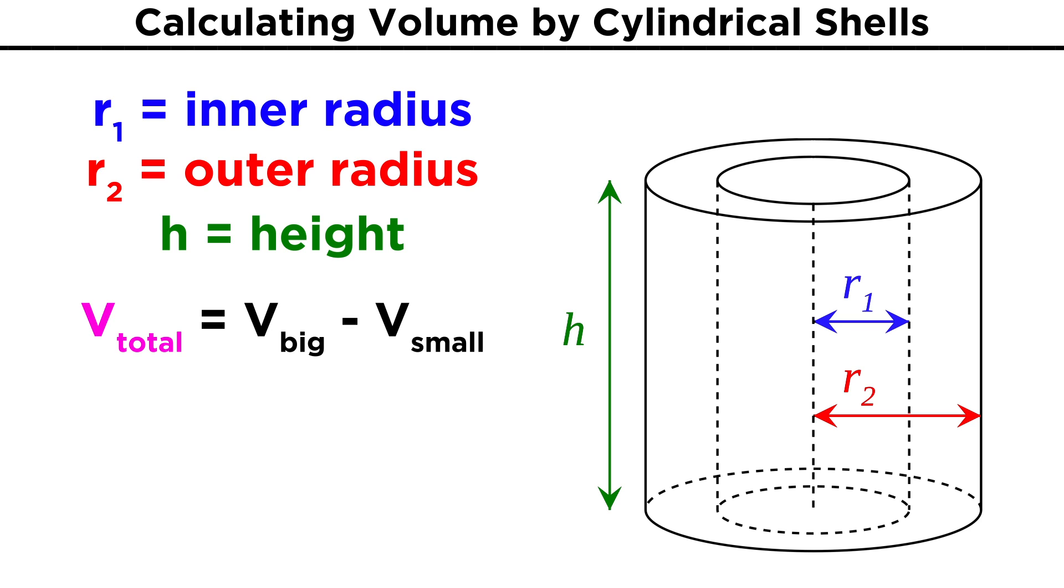To get the volume of this figure, we can calculate the volume of the cylinder using R2, pretending that it is solid all the way through, and then subtract from that the volume of the inner cylinder using R1, since that's all empty space. The formula for the volume of a cylinder is pi R squared h, so let's do pi R2 squared h minus pi R1 squared h.